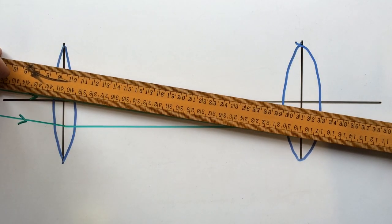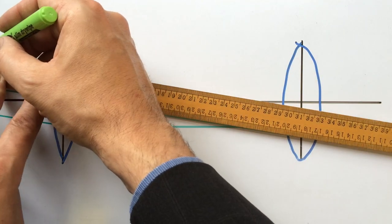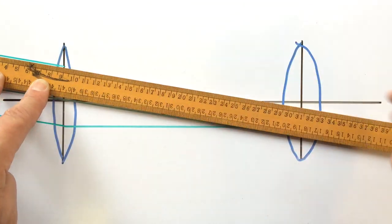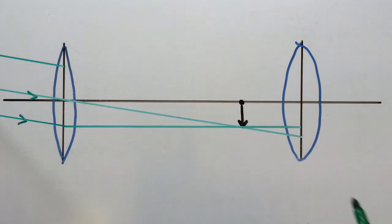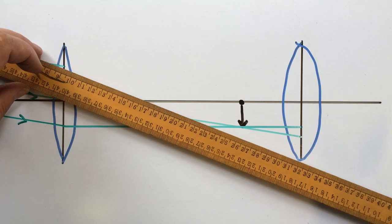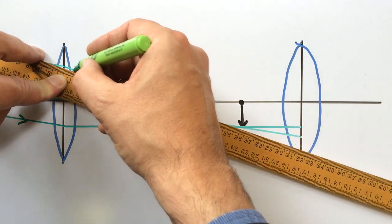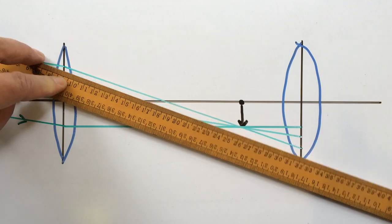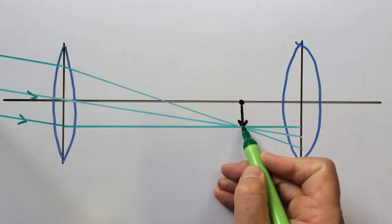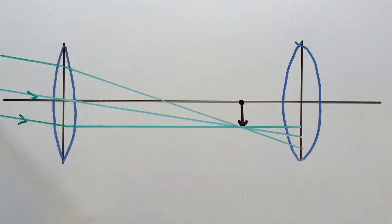Having done that I can now draw a third ray parallel to the original two and I know that that ray should also pass through the tip of the image. So I can draw its path between the two lenses like this and you'll see that all three rays pass through the top of the image like that.